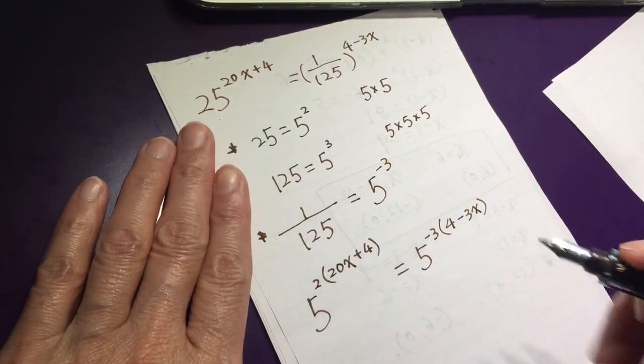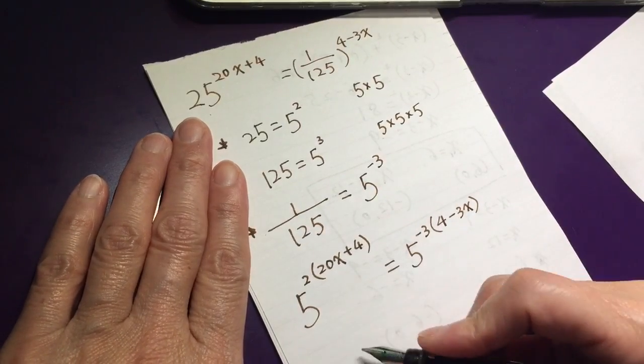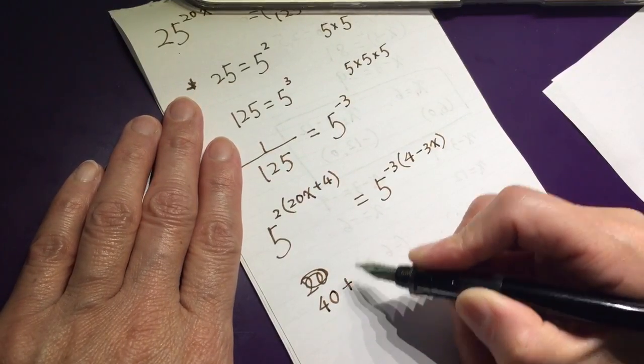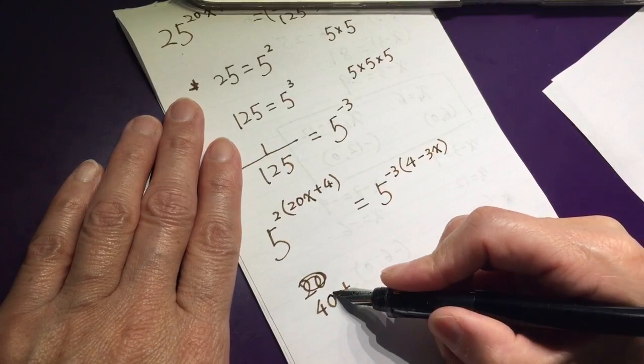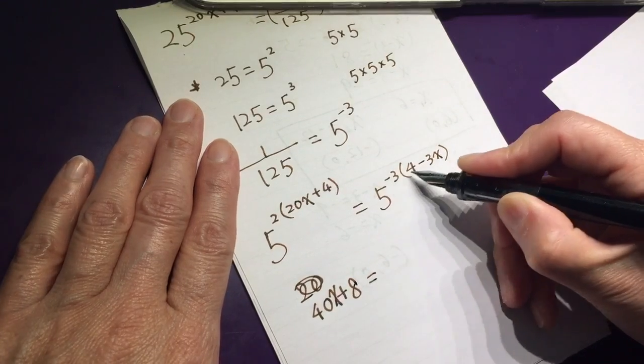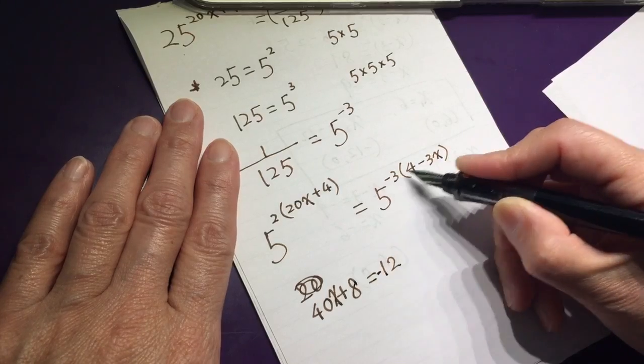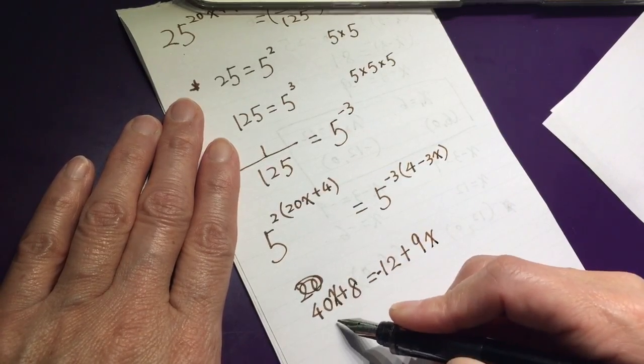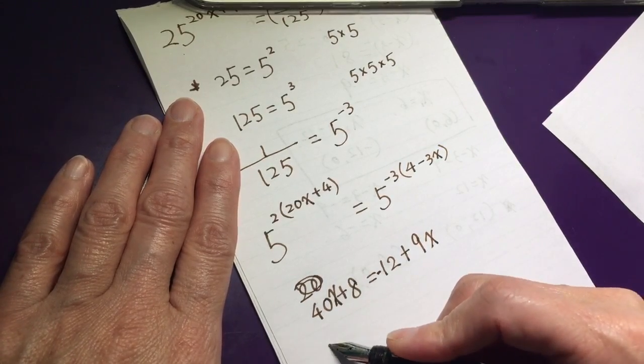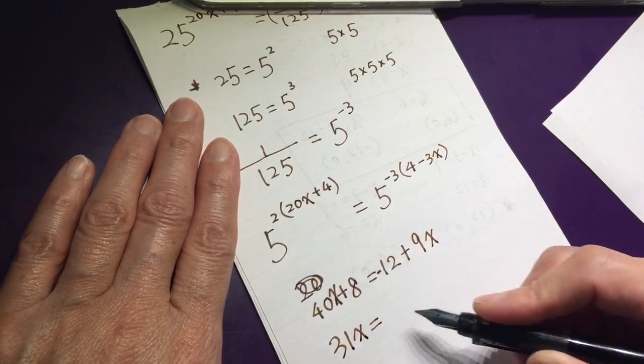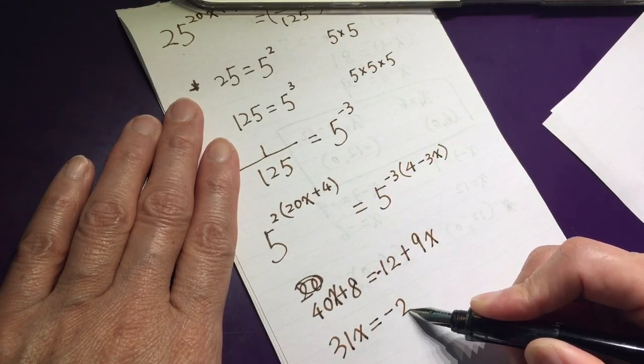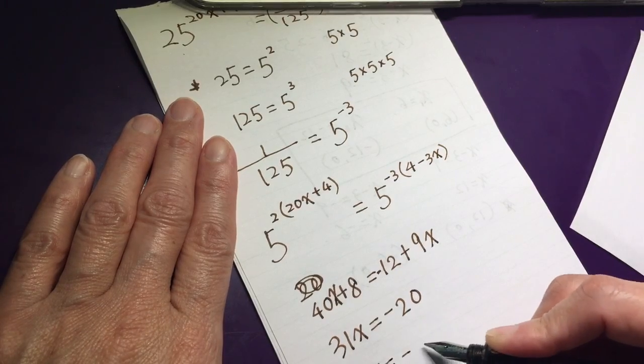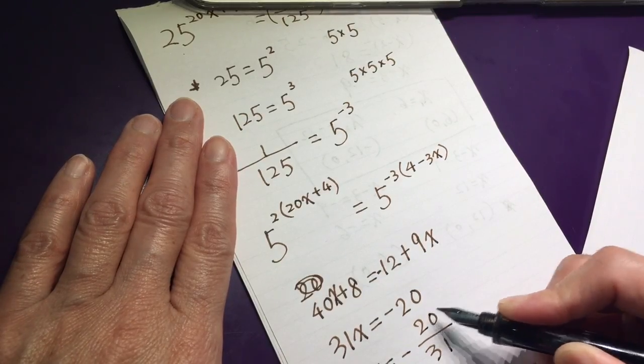May the force be with you. I will not joke around. So, 2 times 20 equals 40 plus 2 times 4 is 8. Oh, I forgot the x sign. 8 equals negative 12. Negative makes positive plus 9x. Move this one around. This side minus 9x minus 9x. So 31x equals negative 20. And x equals negative 31 out of 20, right?